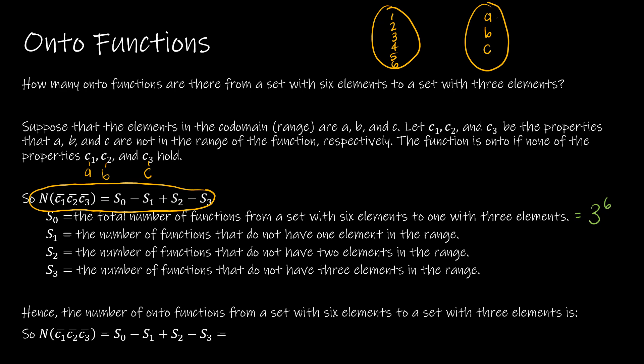For S₁, we're saying the number of functions that do not have one element in the range. So again, if I just look at A, I'm saying now I've got two elements, and still to the sixth, but there are three conditions, and I'm choosing one of them. So (3 choose 1) × 2⁶.